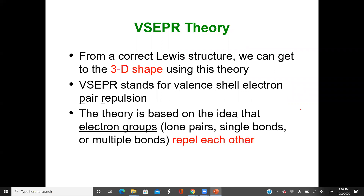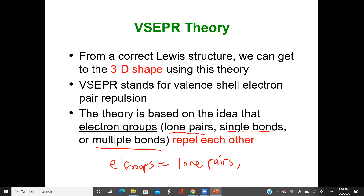I want to remind everybody that electron groups, when we're talking about electron group geometry, that is different from molecular geometry. The electron group geometry looks at lone pairs. Instead of thinking single bonds, double bonds, triple bonds, or multiple bonds, just think electron groups. Your electron groups are just lone pairs or atoms. In this video, we're going to expand the octet, so we'll learn the electron group geometry and the molecular geometry for compounds that expand the octet.